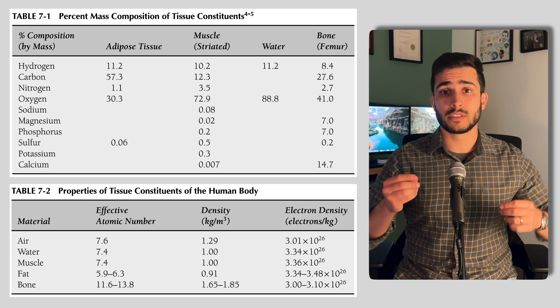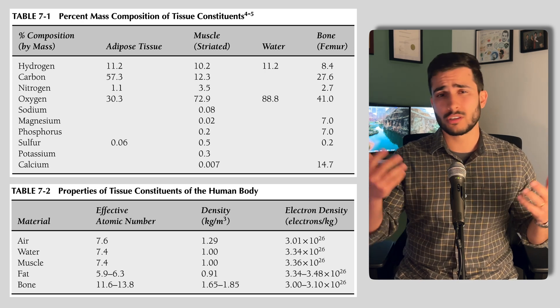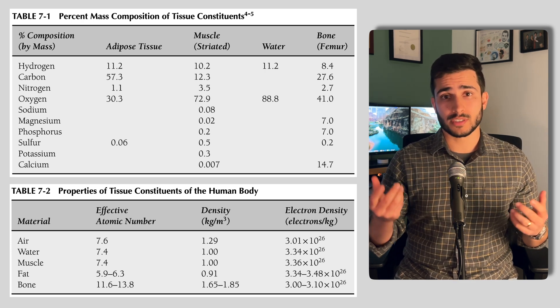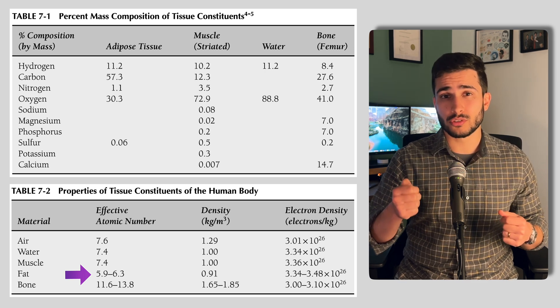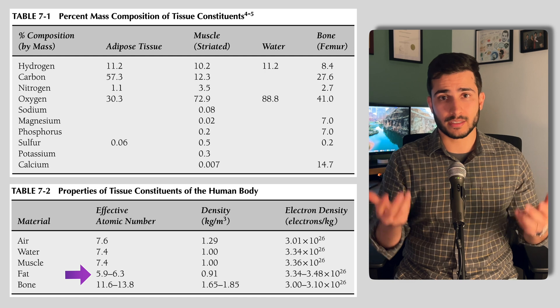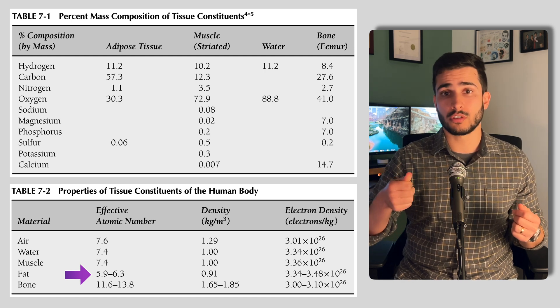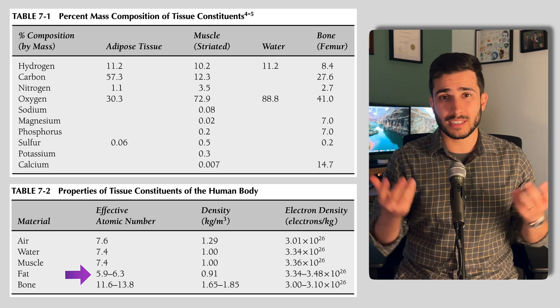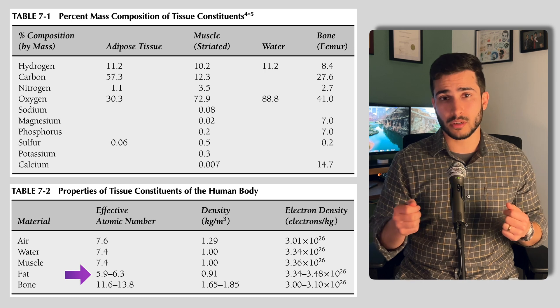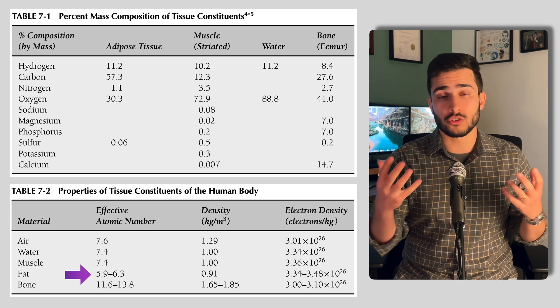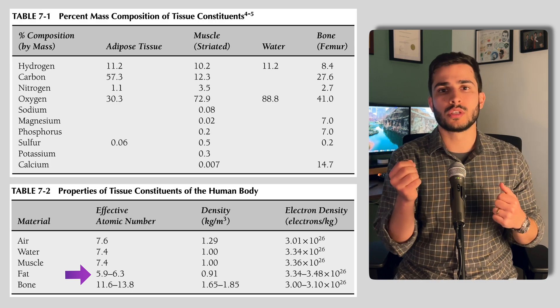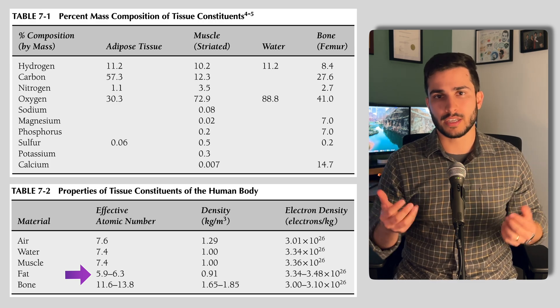Now, when thinking about how well a material attenuates photons, with fat, because it has a lower effective atomic number, the low energy photons are attenuated less rapidly in it than in an equal mass of soft tissue or bone, which basically means that because the atomic number on average is lower, there isn't as much stuff for the photons to interact with, and as a result, there's less photons stopped by or reduced in energy.